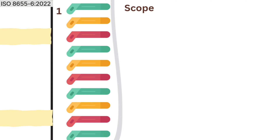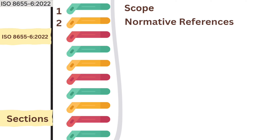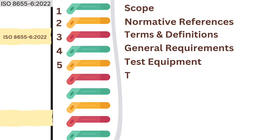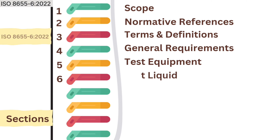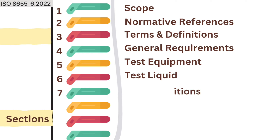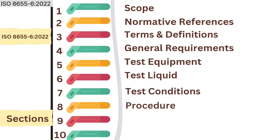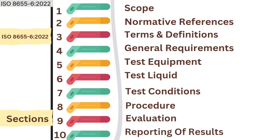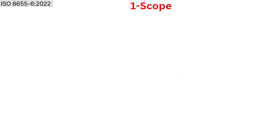The document covers: one — scope; two — normative references; three — terms and definitions; four — general requirements; five — test equipment; six — test liquid; seven — test conditions; eight — procedure; nine — evaluation; ten — reporting of results.